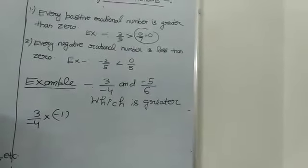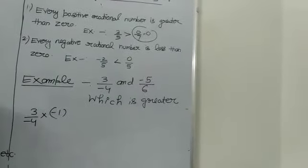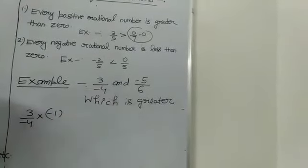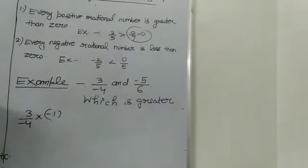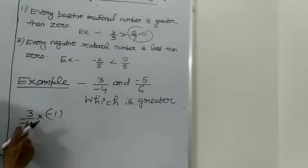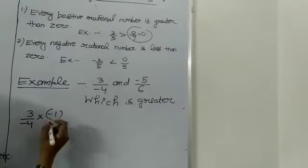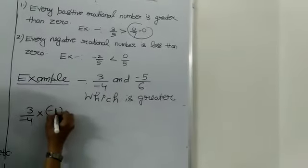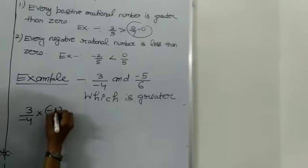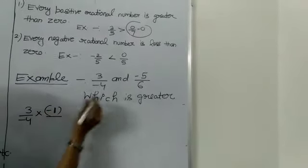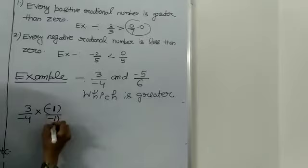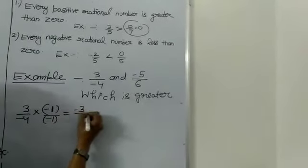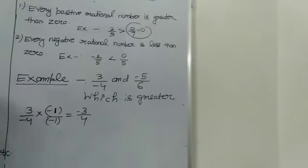The first rule says to convert the rational number into its standard form. So for 3 upon minus 4, we convert the negative denominator to positive, and it becomes minus 3 upon 4.